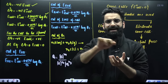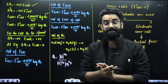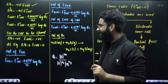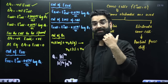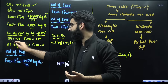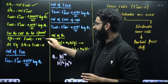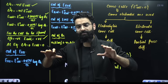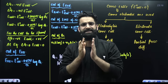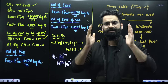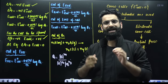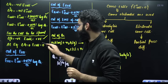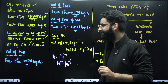For a galvanic cell to work, its cell reaction must be spontaneous: ΔG must be negative, or equivalently the EMF of the cell must be positive. As the galvanic cell operates, it eventually reaches equilibrium. At equilibrium, the potential difference between electrodes becomes zero, the cell stops working, and both E_cell and ΔG for the cell equal zero.